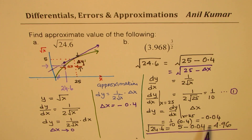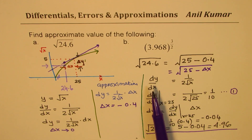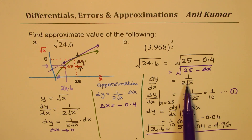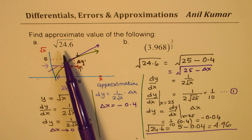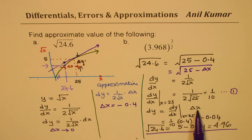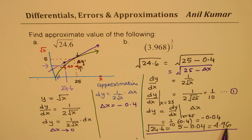I hope you got these steps. So the steps are very simple: you have to find the derivative of the function, and then the value of the function at a point which is closest to your given point, and then the incremental change is to be adjusted to get your value.